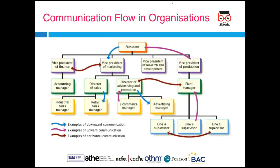Here is an example of how communication flows in organizations. The blue arrows represent downward communication — from president to vice president of marketing, director of sales to retail sales manager, and director of advertising to advertising manager. Examples of upward communication include a line B supervisor to the plant manager. Horizontal communication occurs between similar levels — for example, VP of finance to VP of marketing, director of advertising to plant manager, and line A supervisor to line C supervisor.